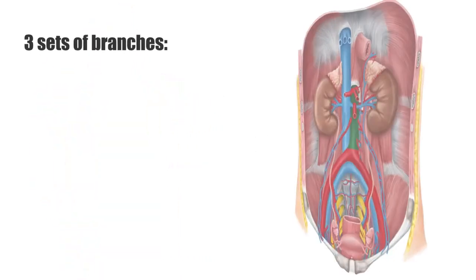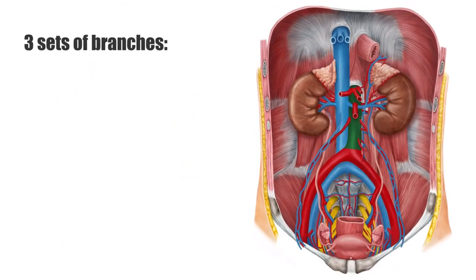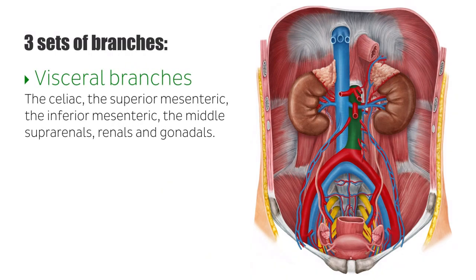There are three sets of branches from the abdominal aorta. The visceral branches: the celiac, the superior mesenteric, the inferior mesenteric, the middle supra-renals, renals, and gonadals. These supply the organs in the abdomen, the kidneys, testicles, and ovaries.